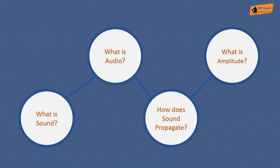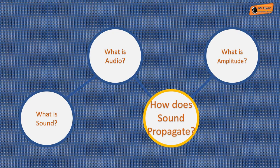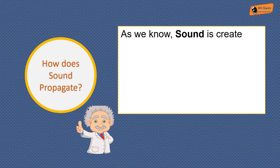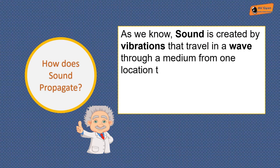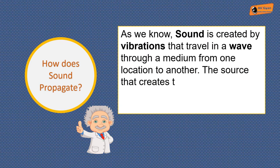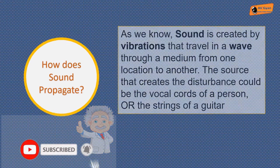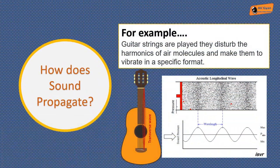So let's go ahead. Now how does sound propagate? This is a bit technical. To understand this, we must know that sound is created by vibrations that travel in a wave through a medium from one location to another. The source that creates the disturbance could be the vocal chords of a person, like in the first example, or the strings of a guitar, like in the second example. When the guitar strings are played, they disturb the harmonics of the air molecules present.